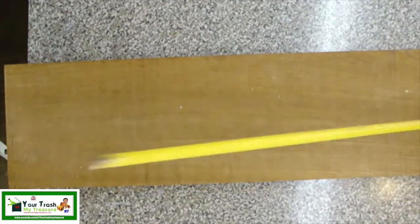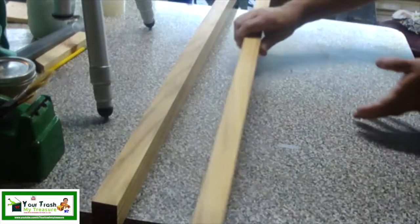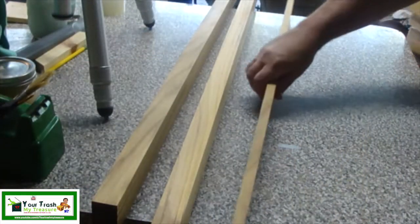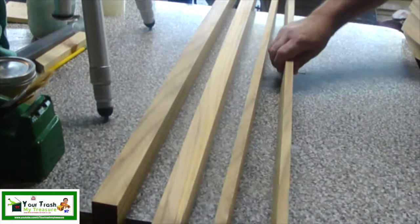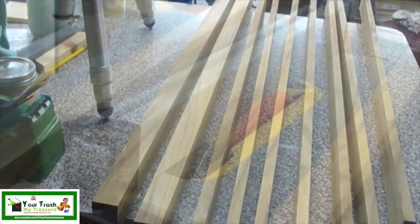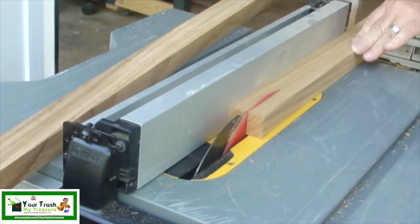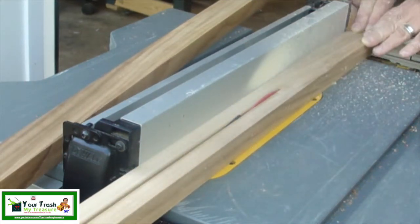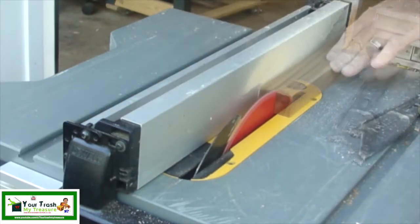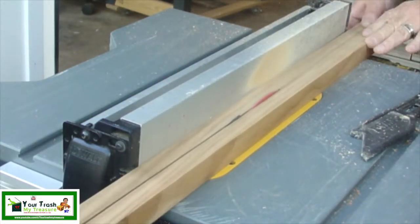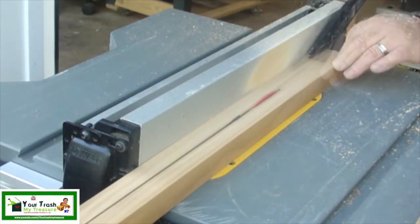The first step was to rip these blocks into 22 strips. Four of them were 40 inches long by one and a quarter inches wide and seven eighths of an inch thick. Those would be used to make the frame. The other 18 were 40 inches long, an inch and a half wide, and a half inch thick. Those would be used to make the shelves.